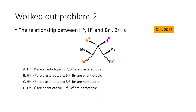In the next problem, we need to find the relationship between HA and HB — two hydrogen atoms — and also between Br1 and Br2. The four answer choices are: (A) HA and HB are enantiotopic and Br1, Br2 are diastereotopic; (B) HA and HB are diastereotopic and Br1, Br2 are enantiotopic; (C) HA, HB are diastereotopic and Br1, Br2 are homotopic; and (D) HA, HB are enantiotopic and Br1, Br2 are homotopic.